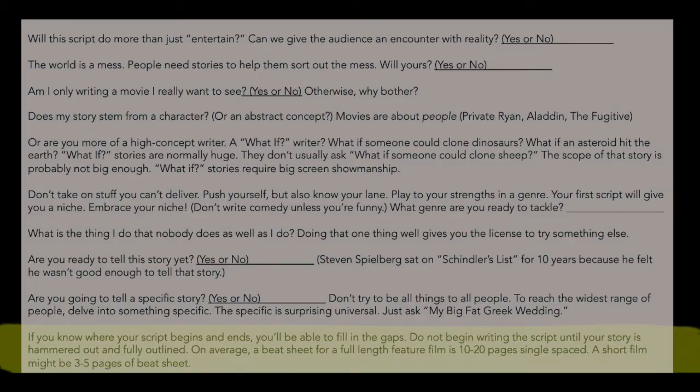On average, a beat sheet for a full-length feature film might be between 10 to 20 pages single-spaced. If you're writing a short film, it might be three pages single-spaced. Don't get too tied into these numbers, but just know that if you are outlining every single scene as it plays out in your movie, typically for a 90-minute film, it's been about 10 to 20 pages single-spaced of outline.